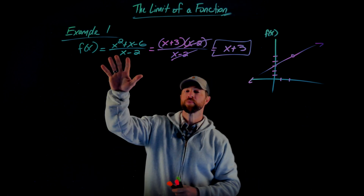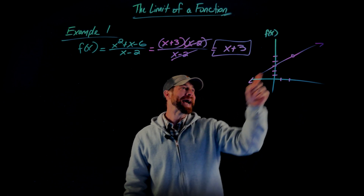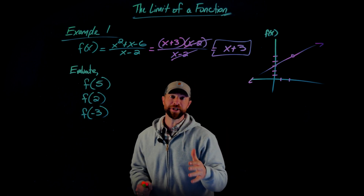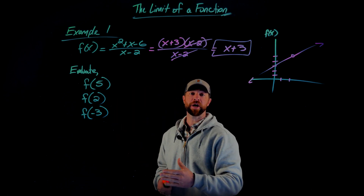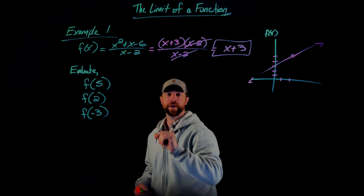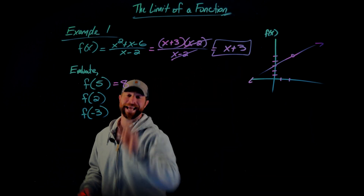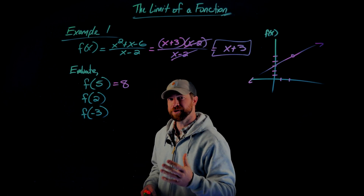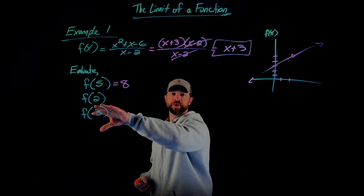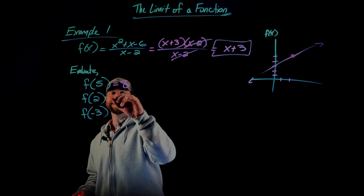This rational function acts like the equation with a slope of 1 and a y-intercept at 3, except it has a hole at 2 — meaning if I plug in 2, I don't get a value. For example, f of 5 equals 8, since 5 is in the domain. However, f of 2 does not exist because 2 is the only input value not in the domain — plugging it in causes division by 0.